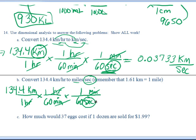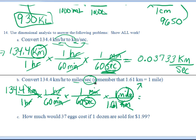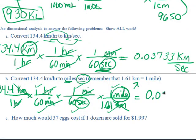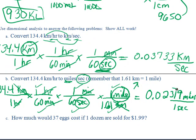Now I focus on kilometers. If kilometers is up top, I need to get it to cancel by putting kilometers down here, and now kilometers will cancel. Then I say 1.61 kilometers is equal to 1 mile. I circle mile because that's what I want — miles per second, miles on top, seconds on the bottom. Now I'm all done. So 134.4 divided by 1, times 1 divided by 60, times 1 divided by 60, times 1 divided by 1.61, and you end up with 0.02319 miles per second.